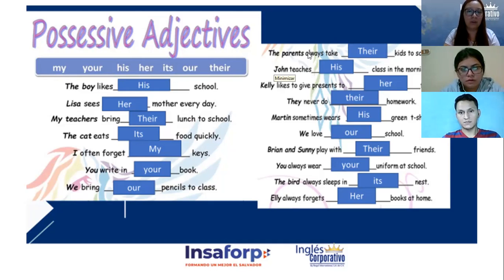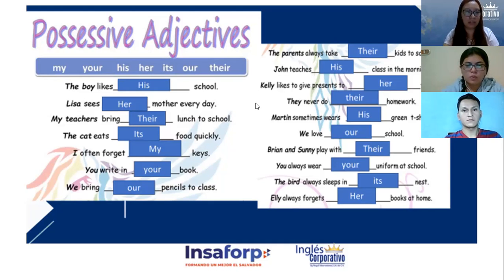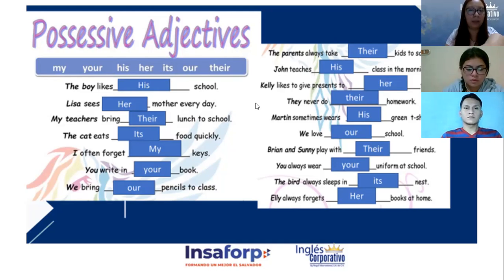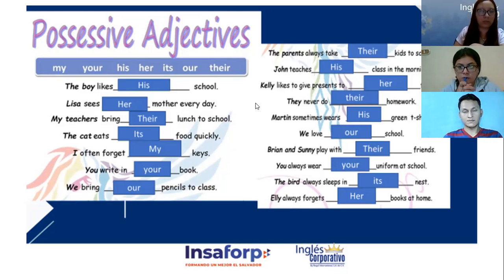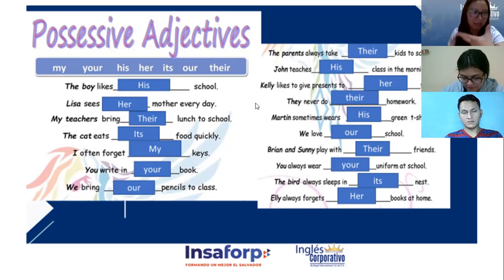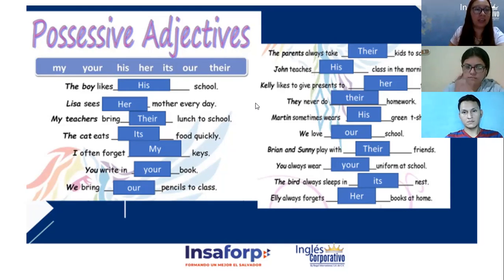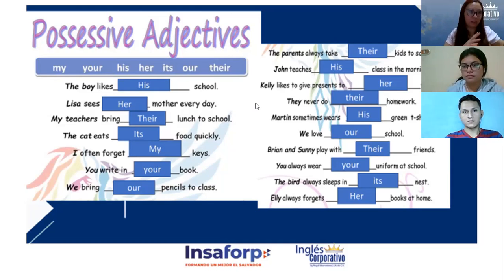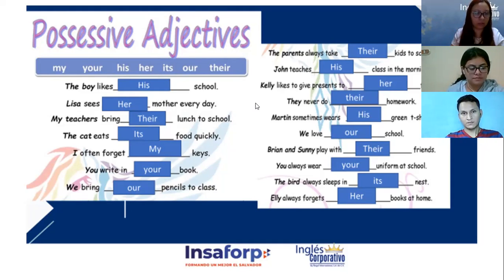Okay, here's what we're going to do. Necesito que escriban dos oraciones utilizando possessive adjectives. Traten de hacerlas un poquito más largas que ayer — no solo 'my name is Anna'. Por ejemplo: 'She is my best friend.' Hagan dos oraciones, ocupen uno diferente por cada oración. El que ya las tenga puede ir levantando la mano.